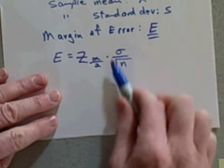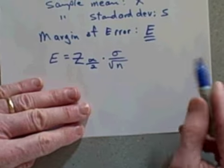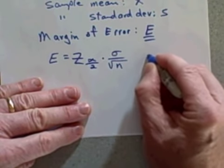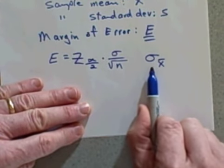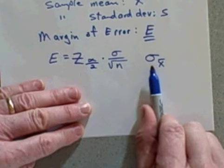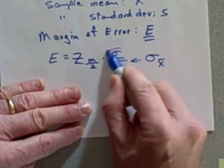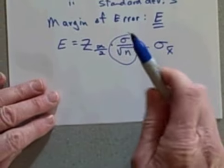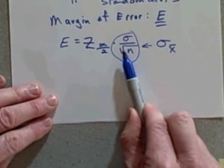Times the standard deviation of the population divided by the square root of the sample size. This part should look familiar—you should recognize this from the earlier chapter as simply being the standard deviation of the distribution of all sample means. So once again, we're going to go out in either direction this many standard deviations.